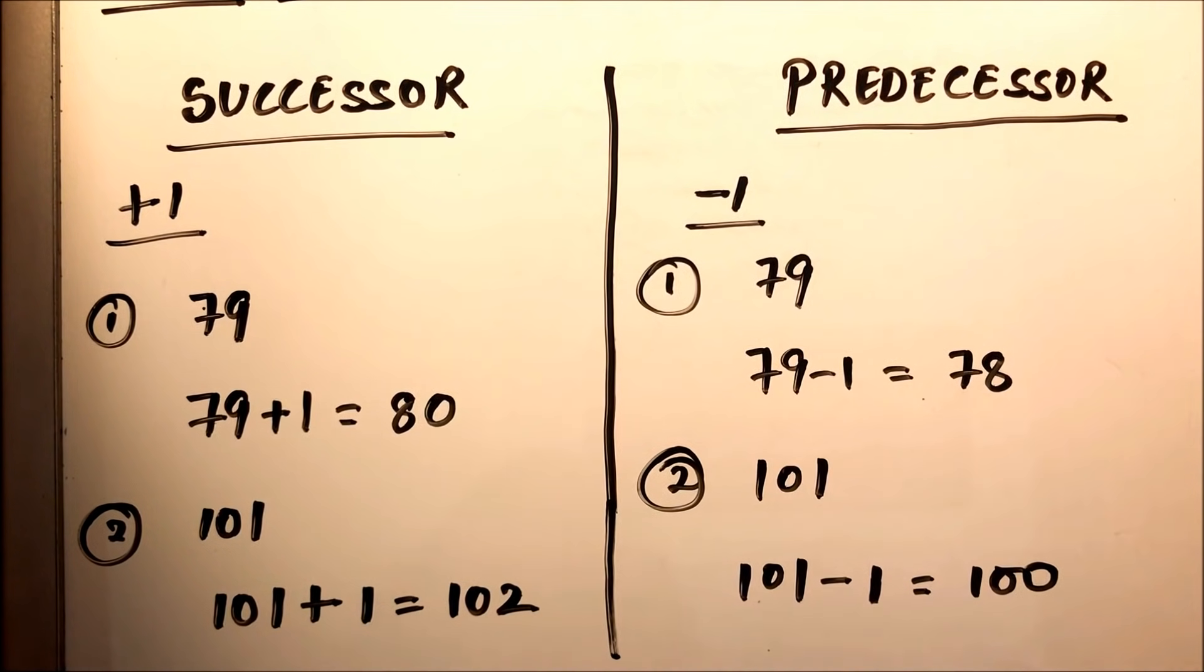So in this way we can find the successor and predecessor of any numbers. Successor means it is one more than the number, and predecessor means it is one less than the number.